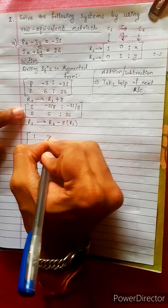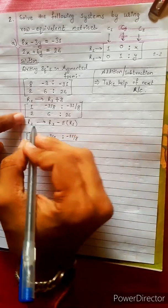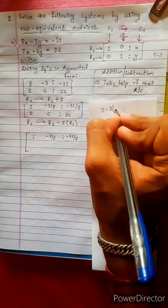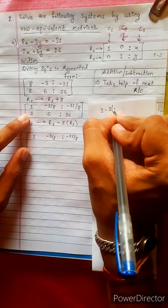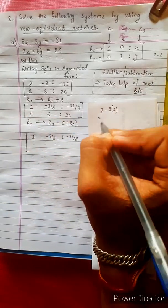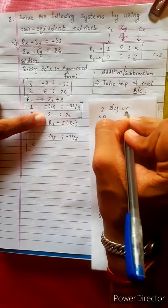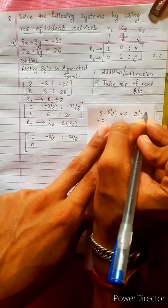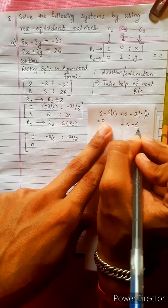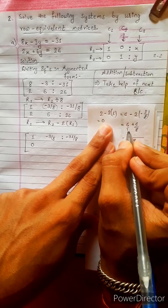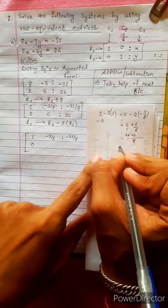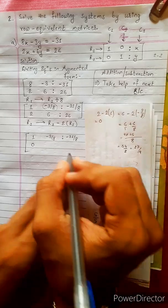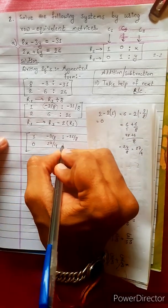Rows are changed. R2 minus 2 times R1: 6 plus 6 by 8. LCM 8 by 8 gives 48. This is 54 divided by 8. 54 divided by 8 is 27 by 4.